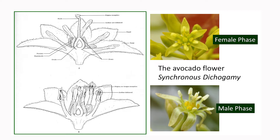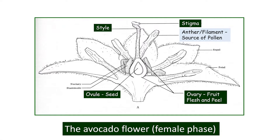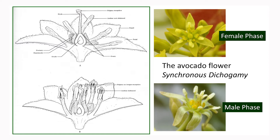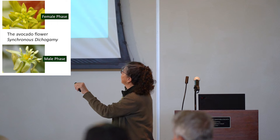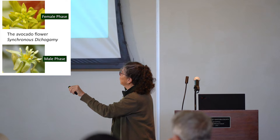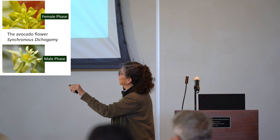The avocado also has a male portion — it's a perfect flower. The anthers, the male portion, surround the female portion. In the female phase, when the flower is open, the ovary, style, and stigma are standing straight up, and the male portion of the flower is lying flat against what are called tepals — not petals or sepals, but tepals.